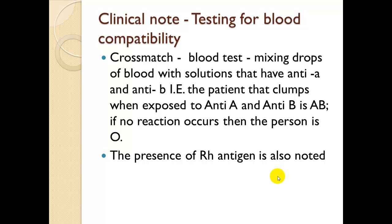Testing for blood compatibility involves a cross-type, cross-match, and type. Typing is based on the ABO system — they figure out what blood type you are. Cross-match is a blood test mixing drops of blood with solutions containing anti-A and anti-B. A patient whose blood clumps when exposed to both anti-A and anti-B is type AB. If no reaction occurs, the person is type O. The presence of Rh factor — positive or negative — is also noted.